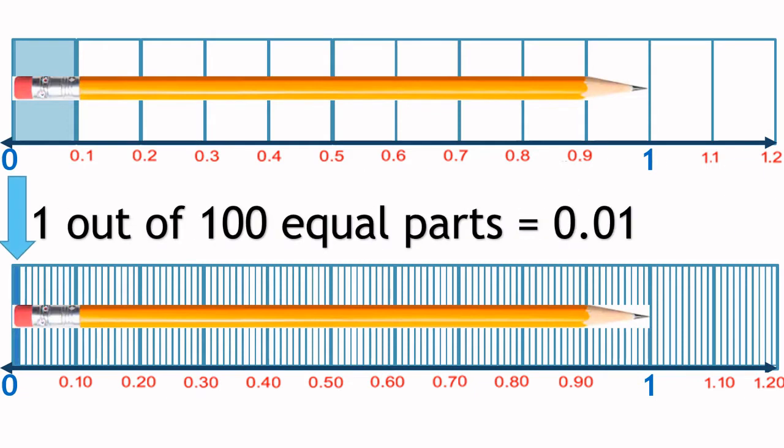And this number line is divided into 100 equal parts where each part is one-hundredths.